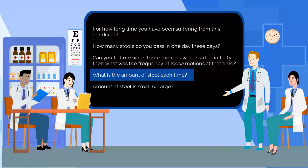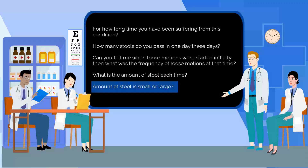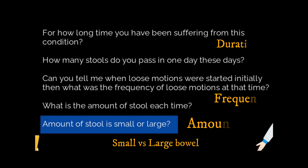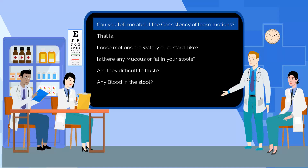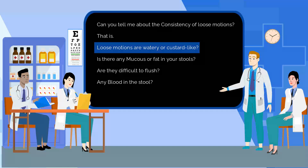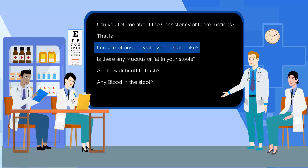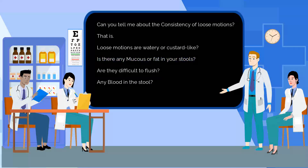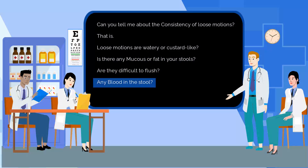What is the amount of stool each time — small or large? Can you tell me about the consistency of loose motions? Are the loose motions watery or custard-like? Is there any mucus or fat in your stools? Are they difficult to flush? Any blood in the stool?